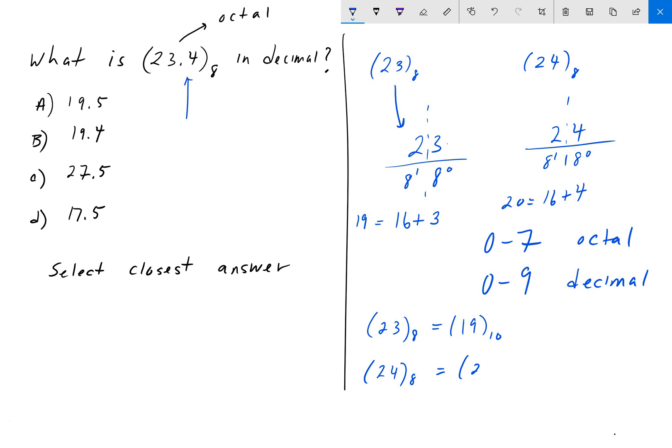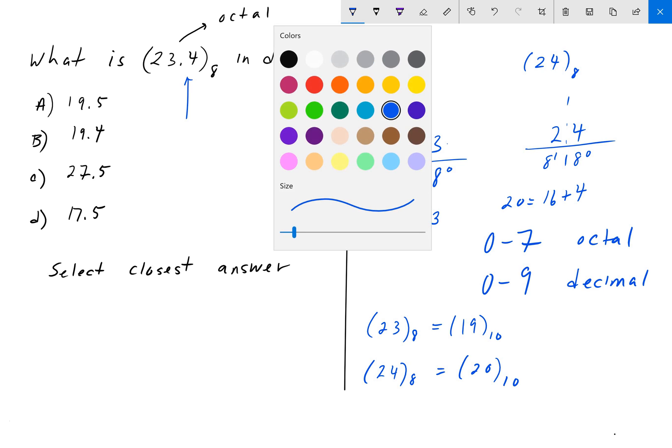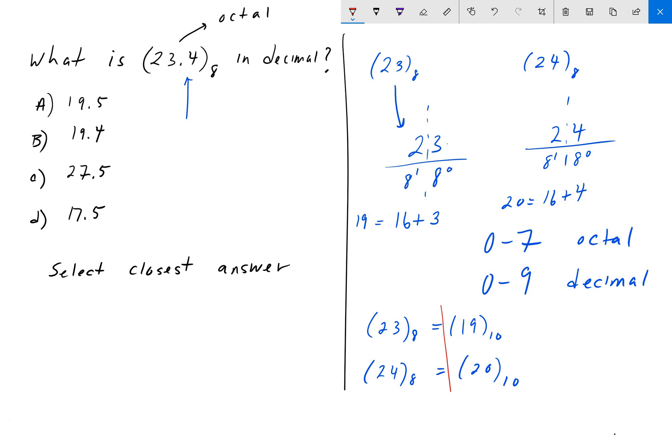Now we have these two numbers here in decimal and we simply can take the average of them and get 19.5, and that is our closest answer. Here you can see they tried to trick you by putting in 19.4, but the answer is 19.5. So did you get that? Let me know in the comments below and until then, enjoy engineering.